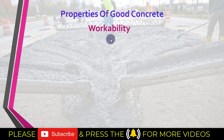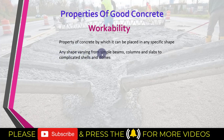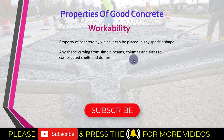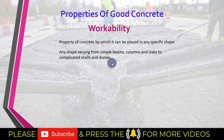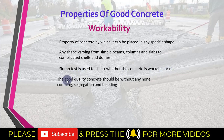The next property of a good quality concrete is workability. Workability is that property of concrete by which it can be placed in any specific shape. If it is workable concrete, then it can be poured and molded into any shape, varying from simple beams, columns, and slabs to complicated shells and domes. There are many laboratory tests performed on concrete to check workability. The most commonly performed test is the slump test. A good quality concrete should also be without any honeycombing, segregation, and bleeding.